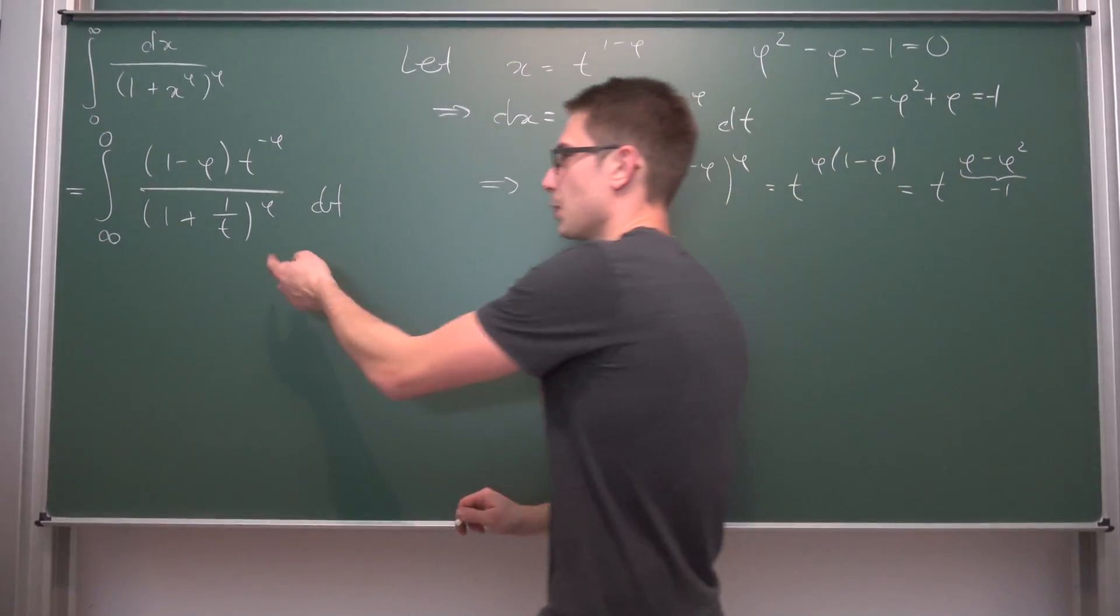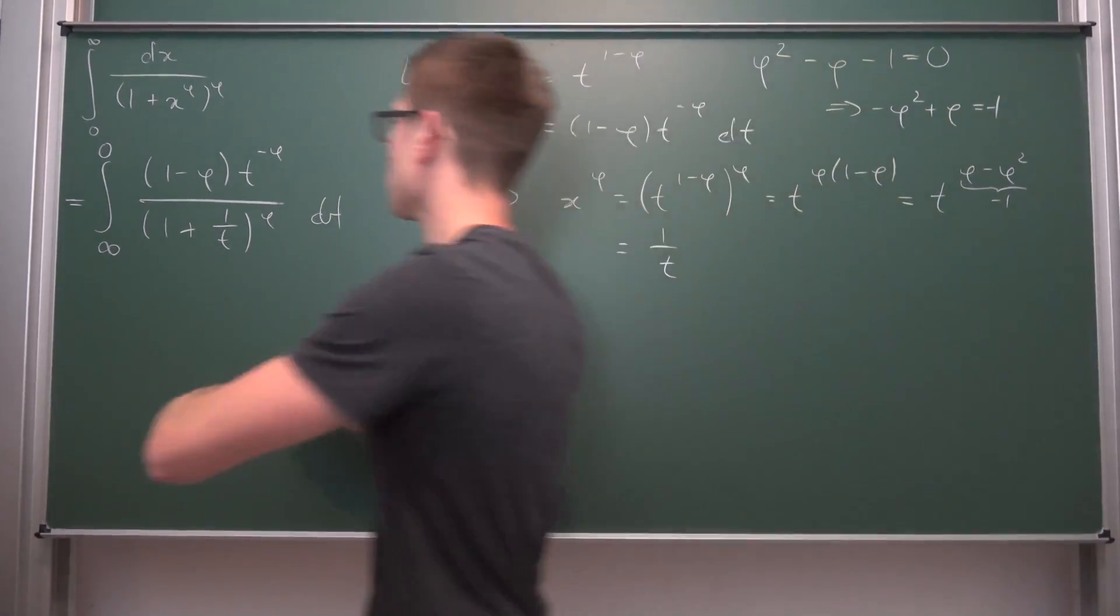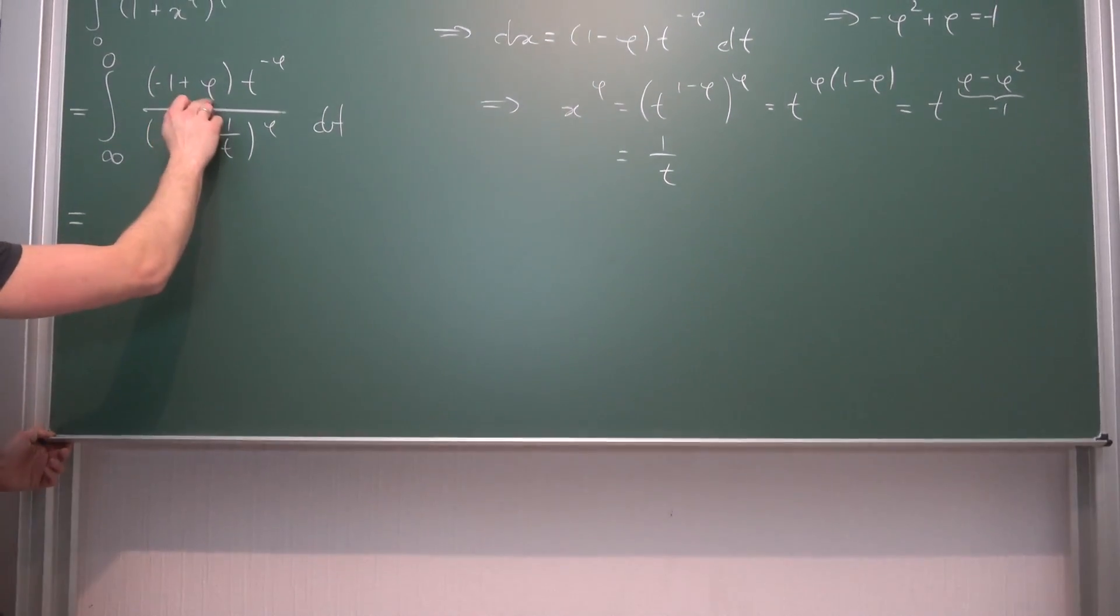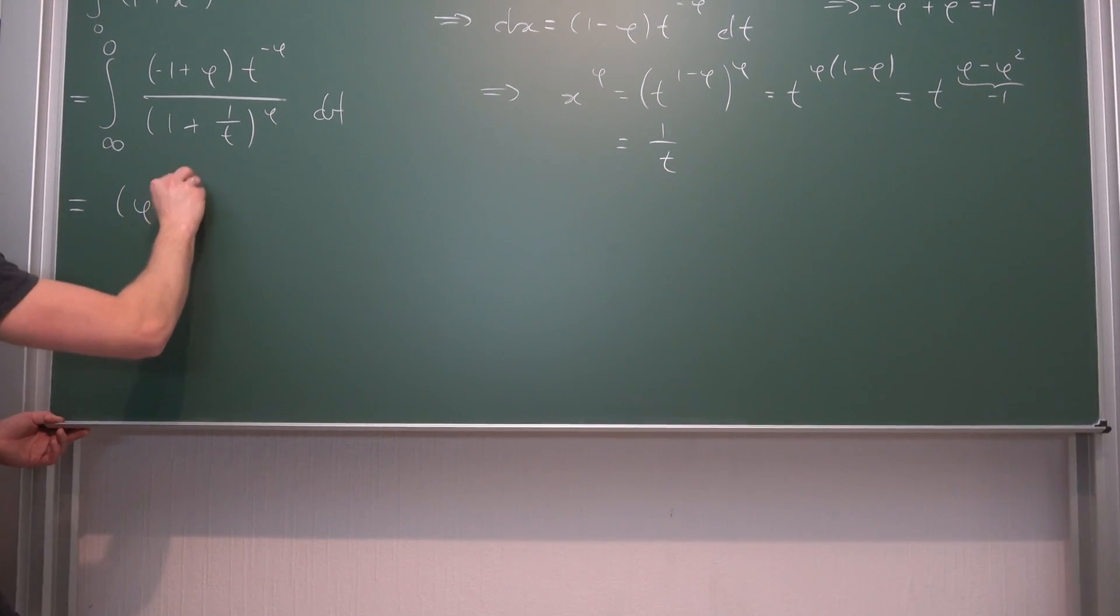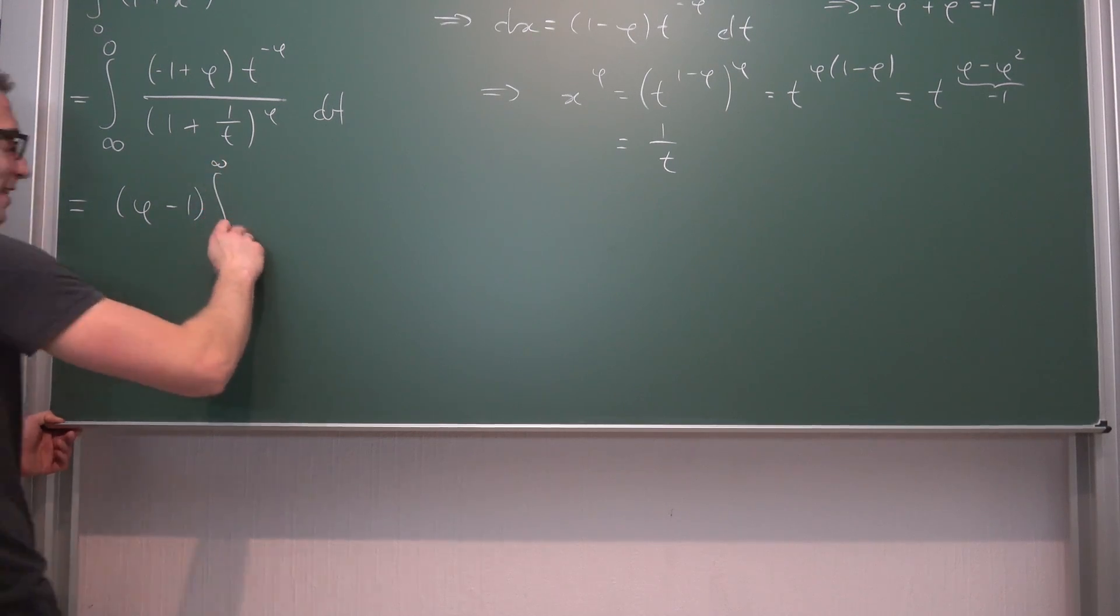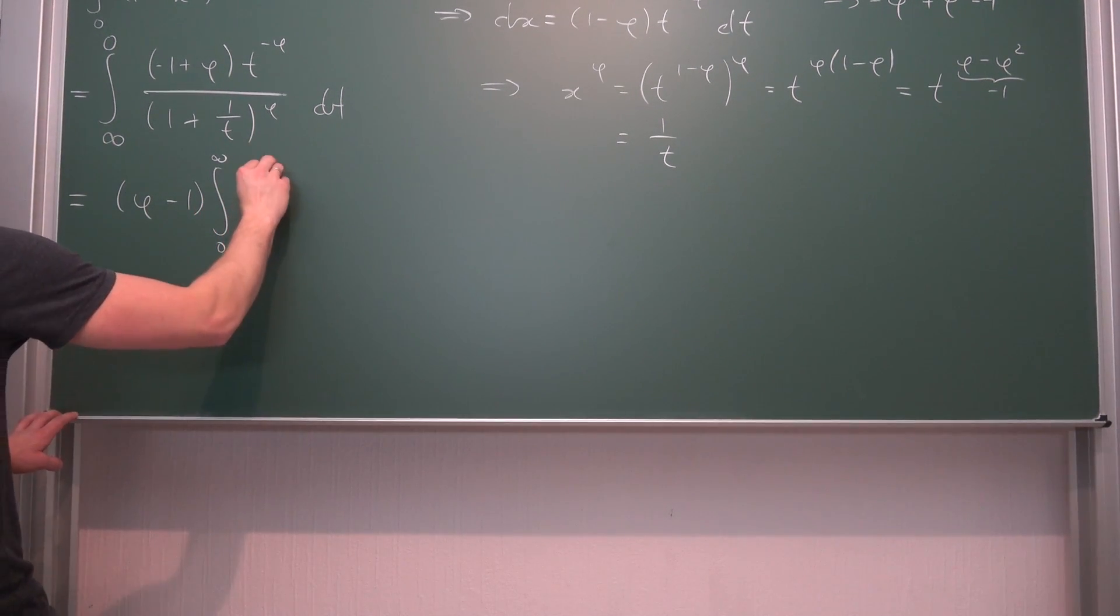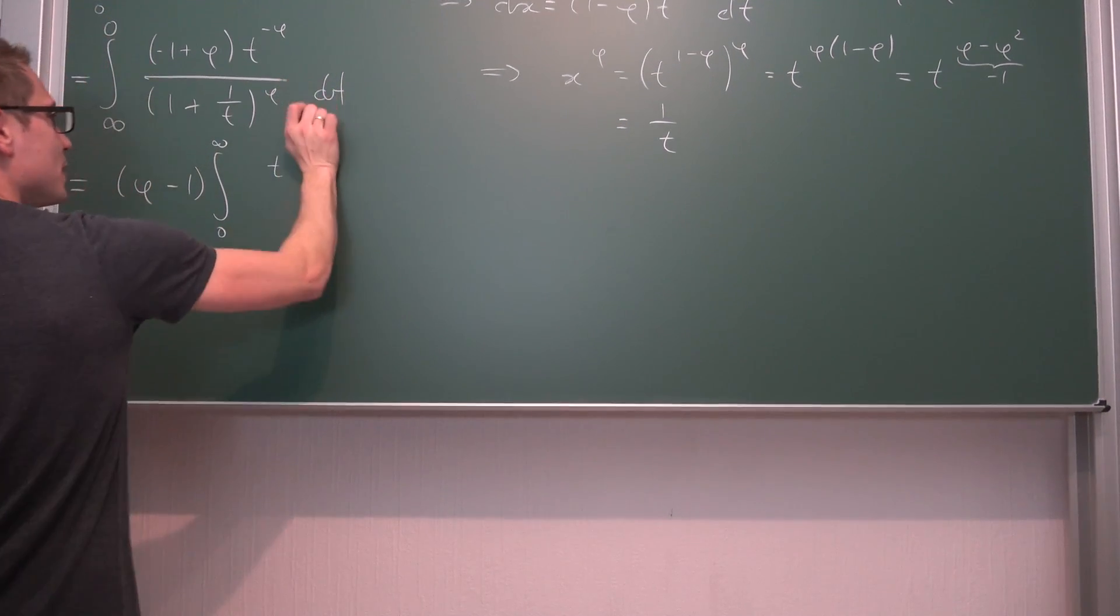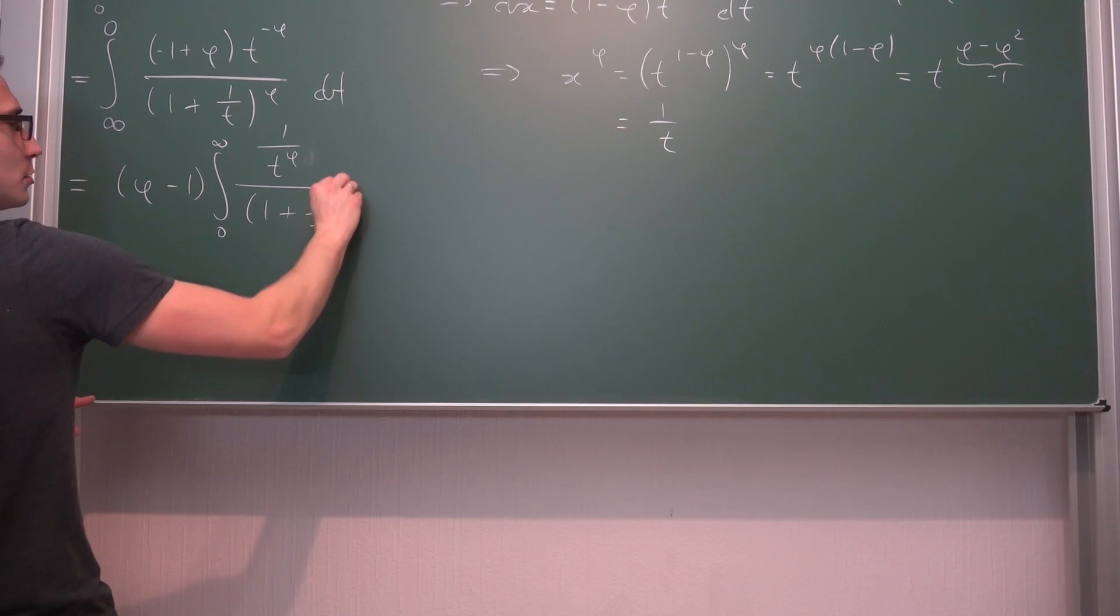Now the first thing that we are going to do is change the upper and lower bounds. This is annoying the fuck out of me with a bigger value at the bottom than at the top. So we're going to drag a negative 1 to the outside, turning this into negative 1 plus phi, turning those around in the process. Since this is a constant, we can make use of linearity of the integral to bring it to the outside too. So this is phi minus 1 times the integral from 0 to infinity. Then we are going to get t to the negative phi, or in other words, 1 over t to the phi, divided by 1 plus 1 over t to the phi, dt.